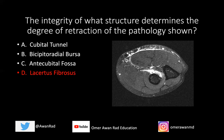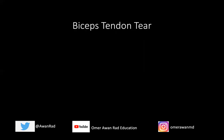This is aponeurotic tissue that exists medially and extends to the medial, anteromedial fascia of the mid-forearm. This is known as the lacertus fibrosus — very important in anchoring and keeping the biceps tendon intact and not allowing it to be retracted.